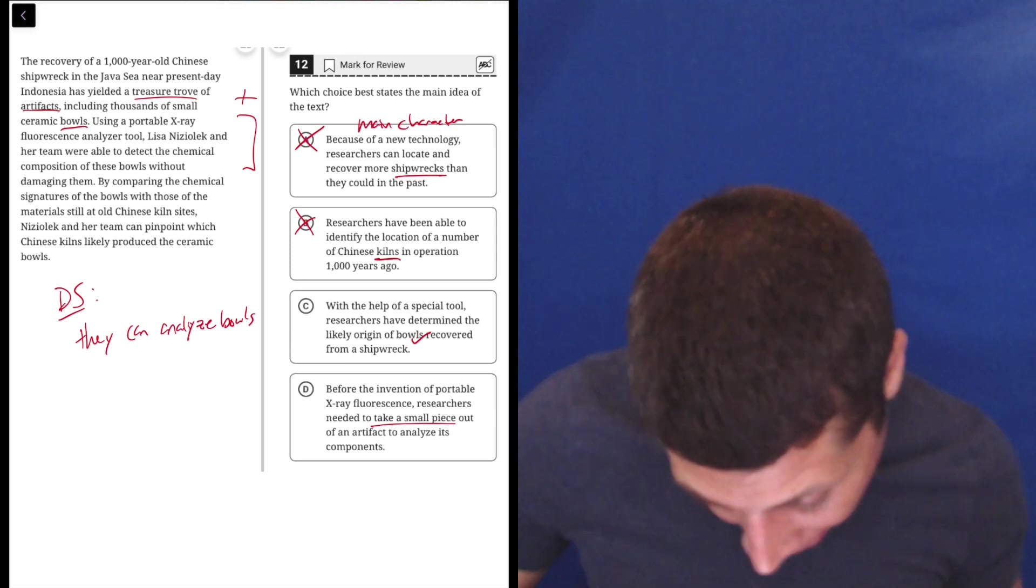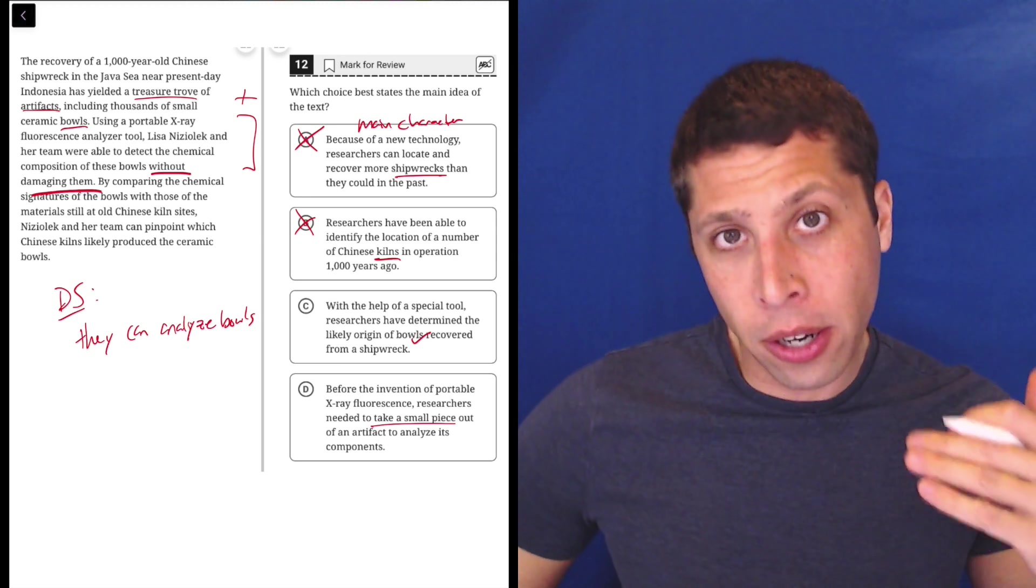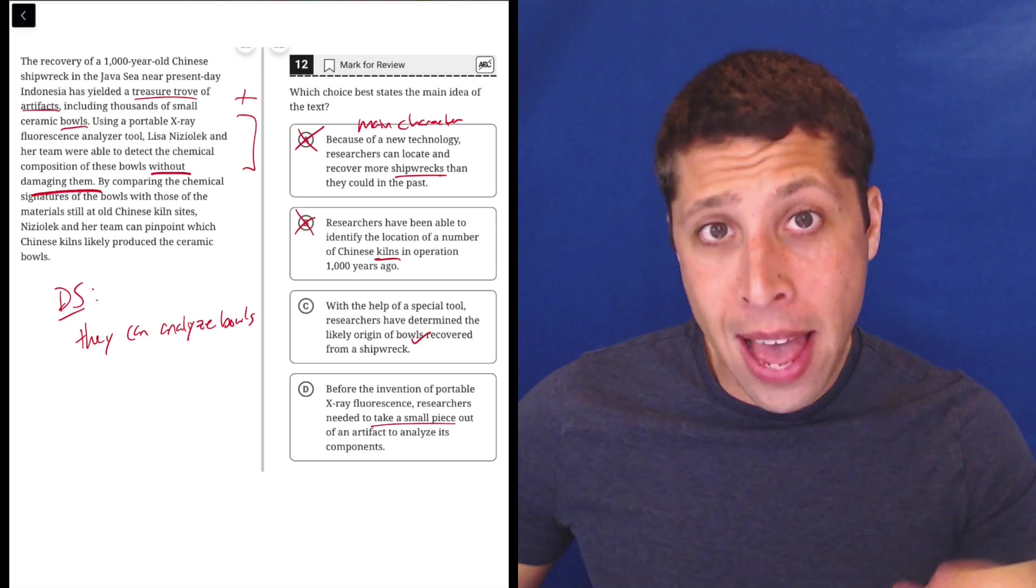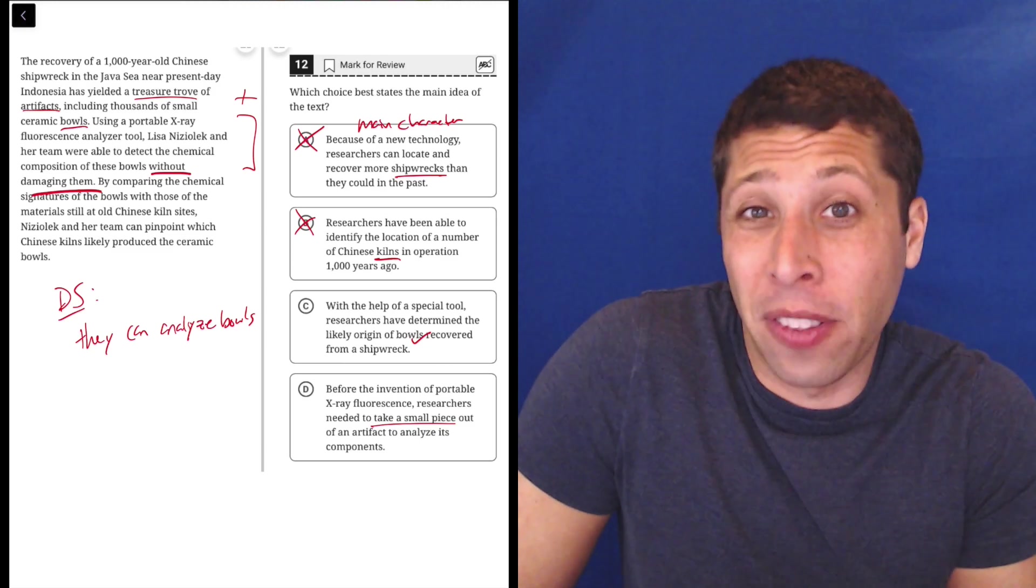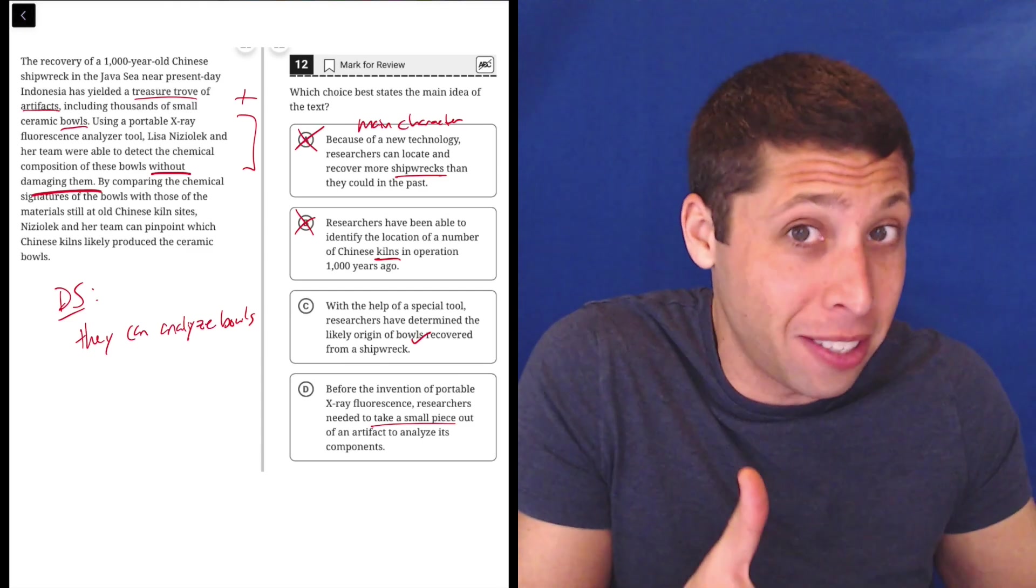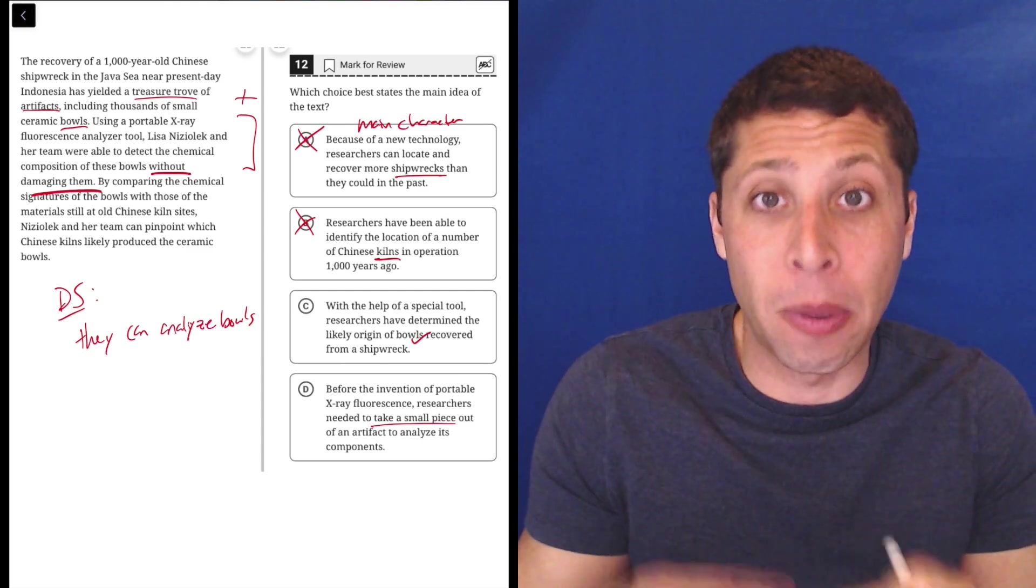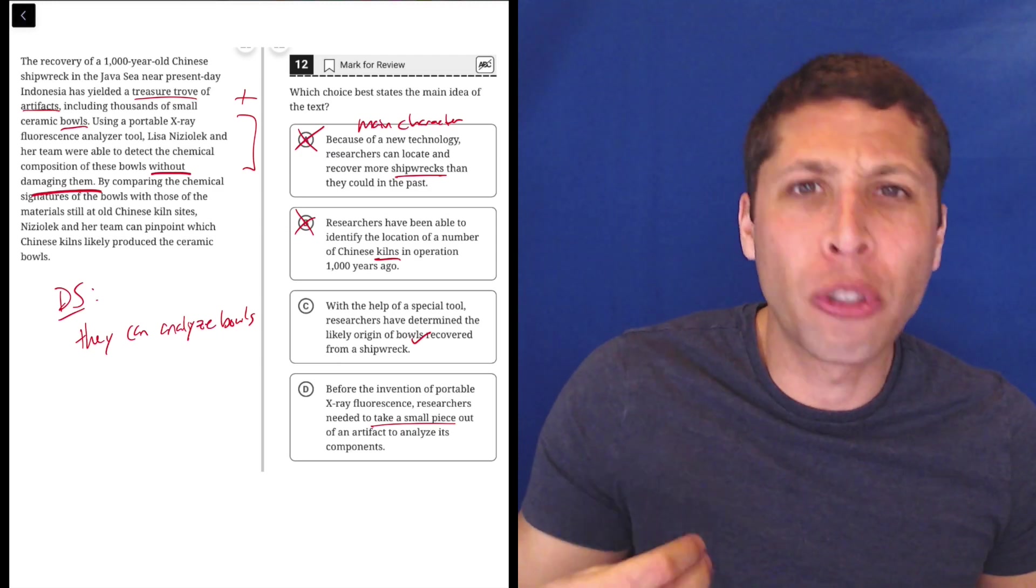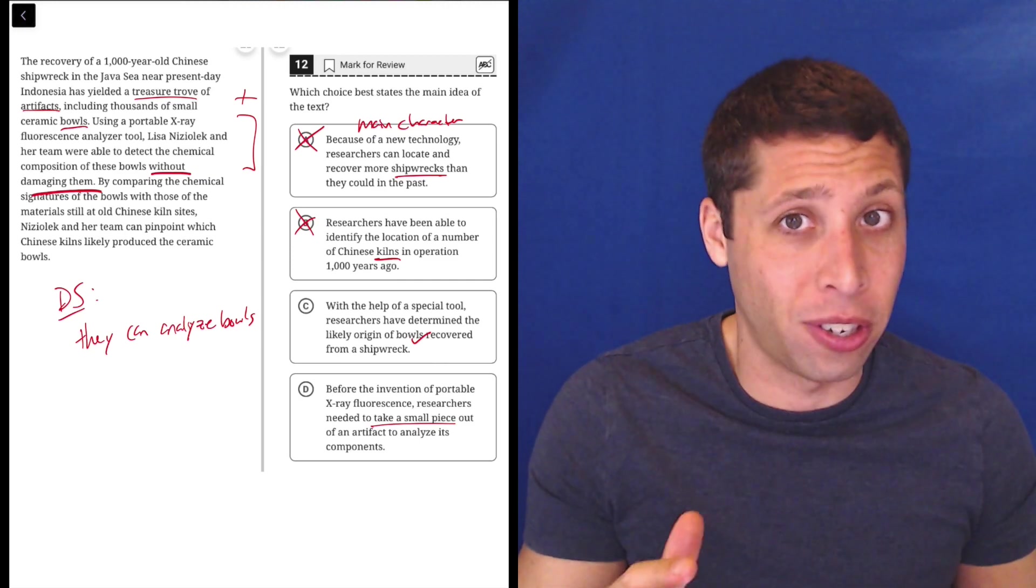Maybe by saying that they can do it without damaging them, they're implying that in the past they did need to damage it, but that's an implication. That's a suggestion, right? Now that sometimes is what an SAT question is about, but they're going to ask that. They're going to maybe rephrase the question to be which of the following is most strongly implied or suggested by the information in the passage.